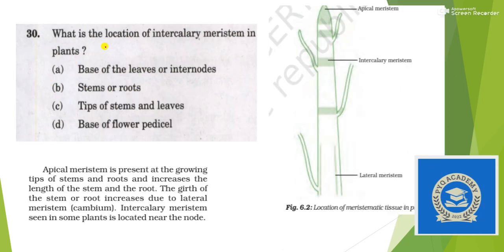Next: what is the location of intercalary meristem in plants? Intercalary meristem is seen in some plants and is located near the node — at the base of a leaf or internodes. So the answer is option A.